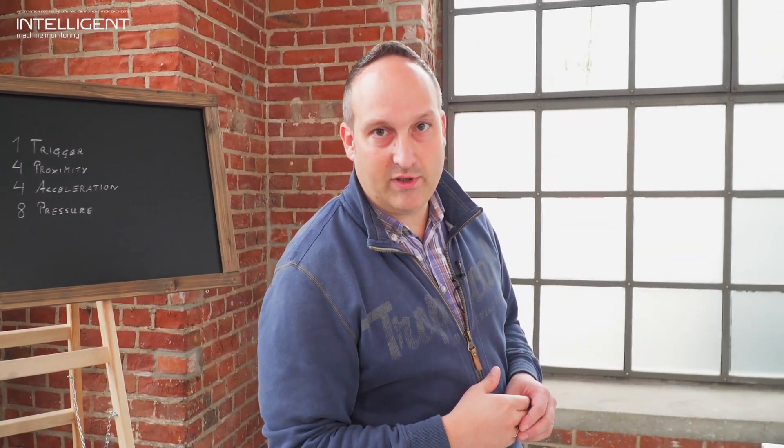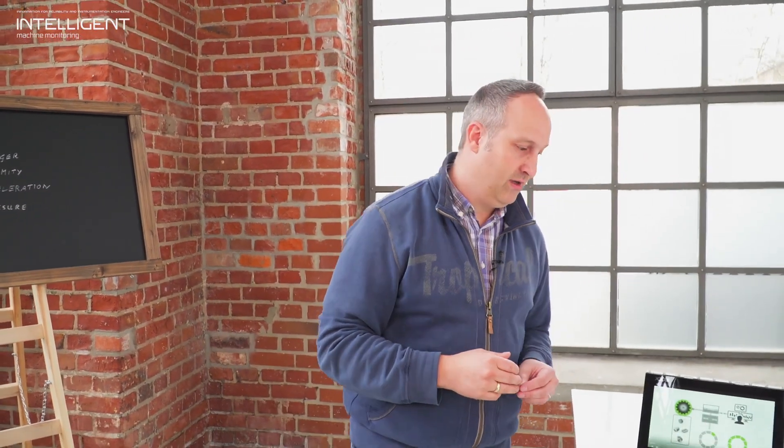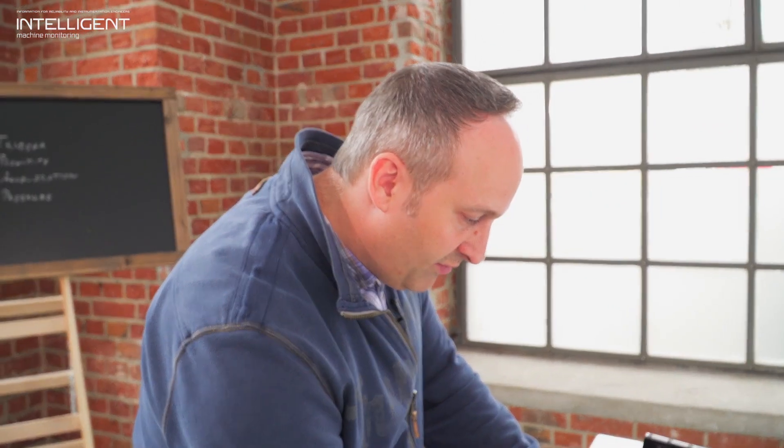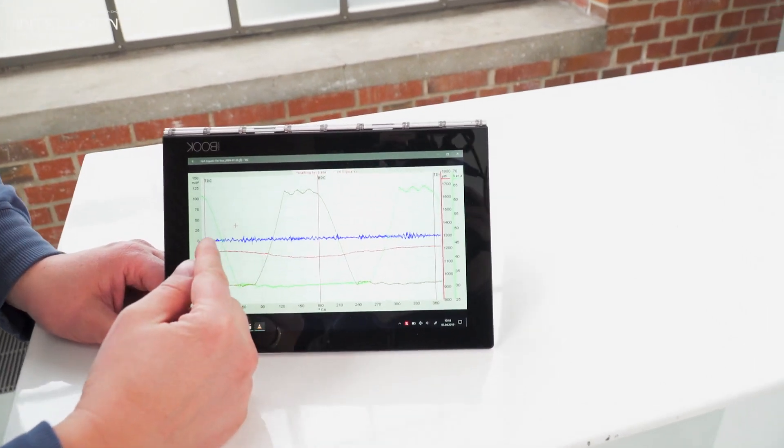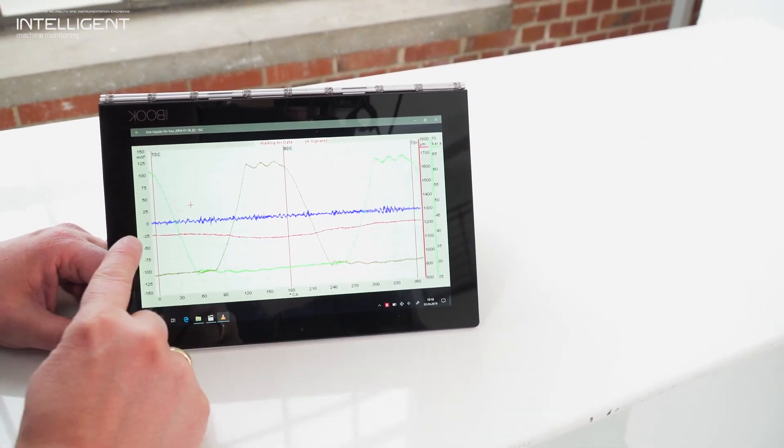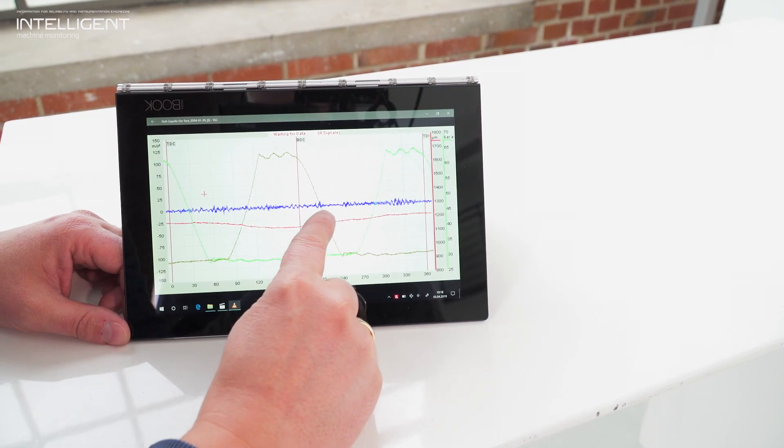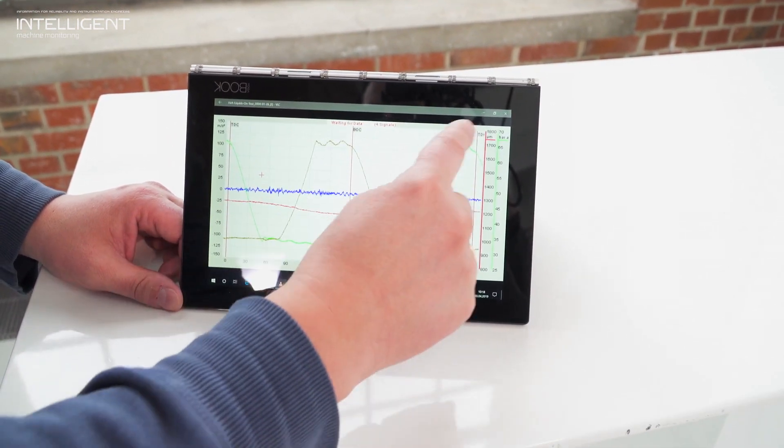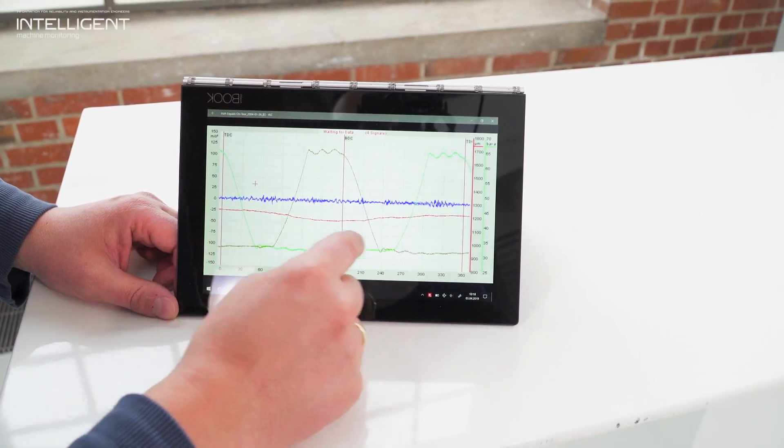The machine will run with 420 rpm. Let's start the movie which also the operator can see. You will have here the acceleration signal, the piston rod position, and also the dynamic pressure information for head end and crank end side.